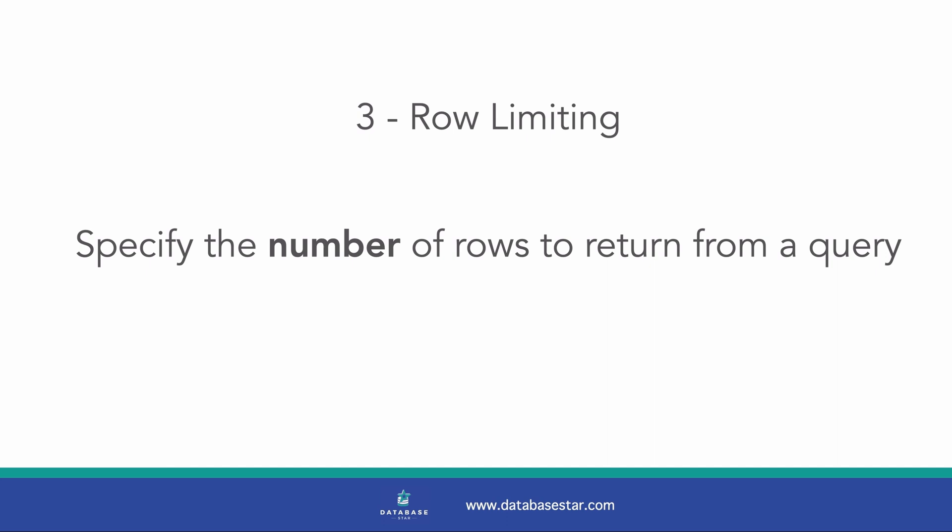The third SQL feature I want to share is row limiting. Row limiting is the ability to return a specific number of rows from a query. A SELECT query has a WHERE clause that filters based on criteria, but there's no guarantee on how many rows are returned. Sometimes you want to limit your results to an exact number of rows, such as 5 rows or 10 rows. You can do this using the row limiting feature in SQL. Let's see an example.